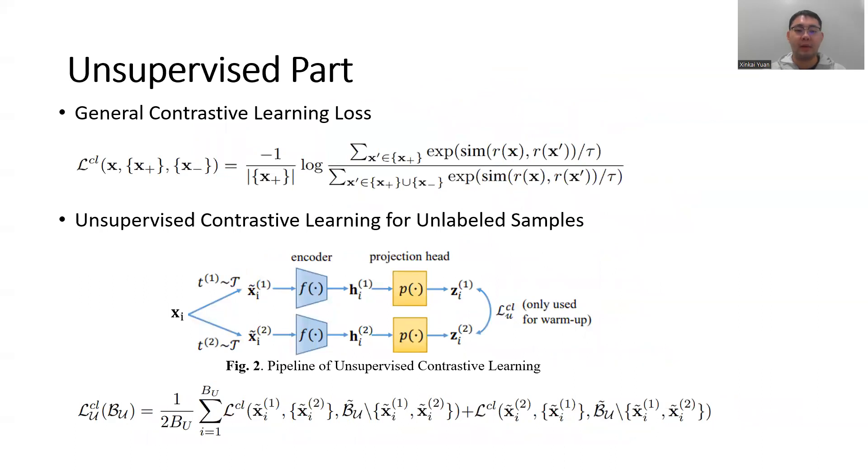I'd like to elaborate on the unsupervised contrastive learning for unlabeled samples. But before doing that, I will first give a brief explanation on the loss function for the general contrastive learning. For each sample x, it has its positive samples x plus and its negative samples x minus.